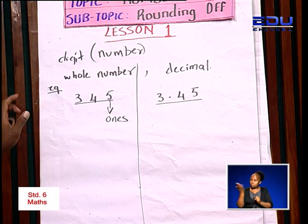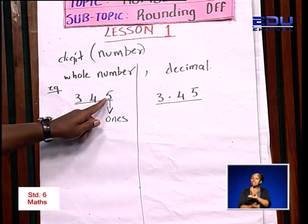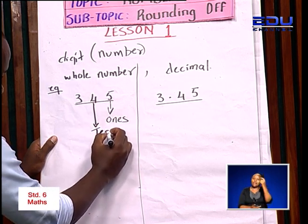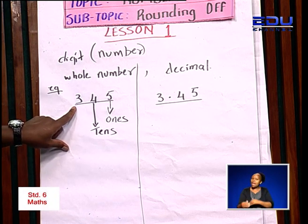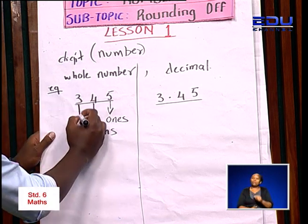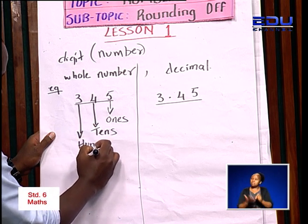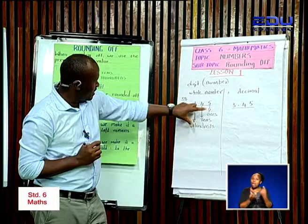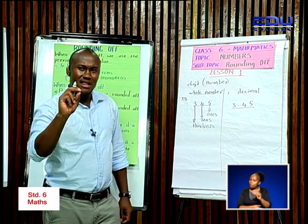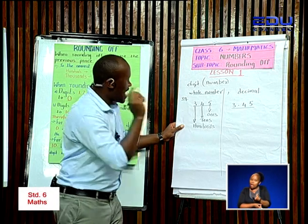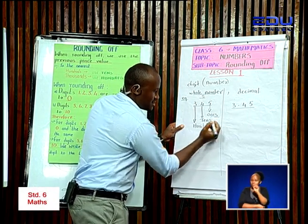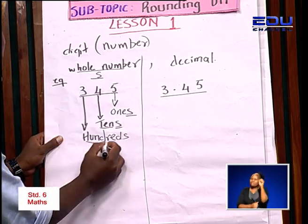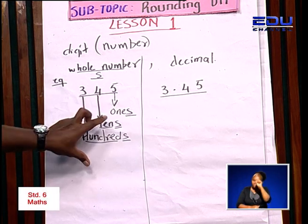We are talking about whole numbers. The next digit to the left of that digit is going to be place value tens. And the next digit is going to be hundreds. This is whole numbers. And if you look at this, you find that at the end of each place value, we add the sound 's' — ones, tens, hundreds. That's the 's' sound on the whole number.